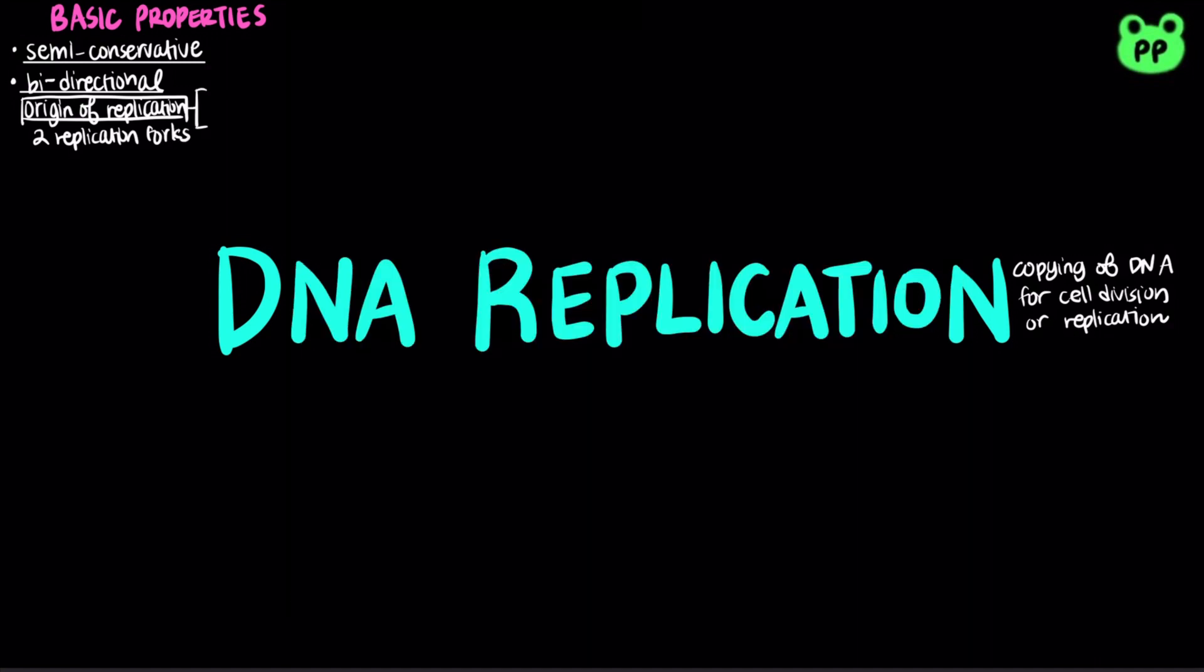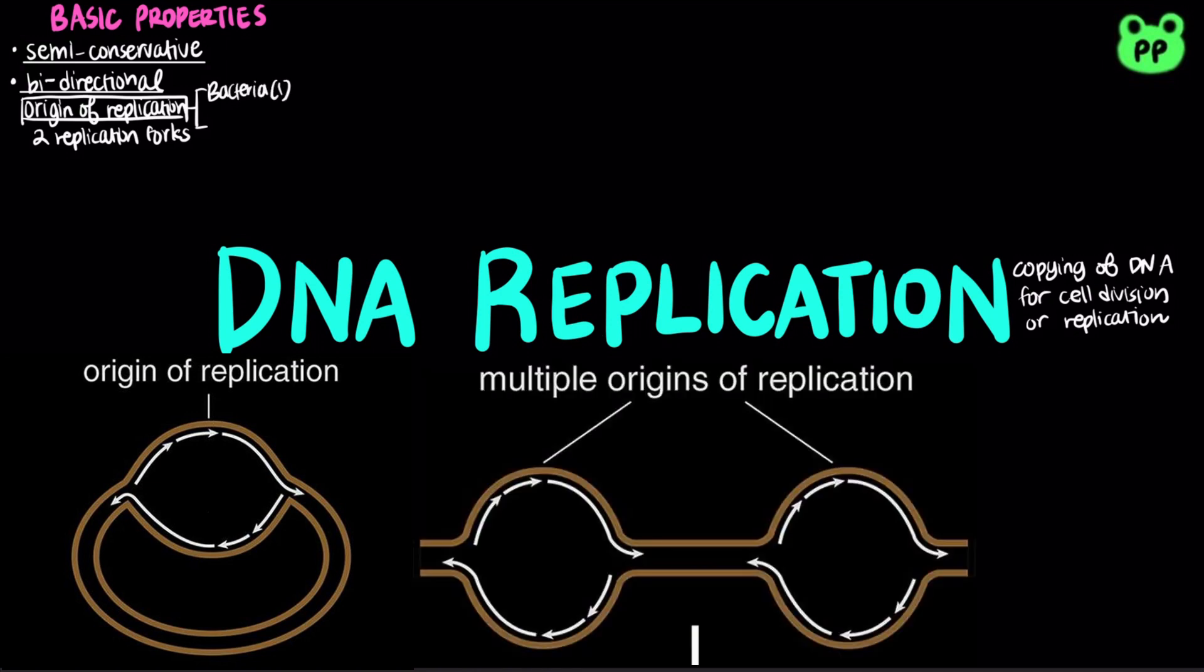Bacterial chromosome is circular and only has a single origin of replication, whereas eukaryotic chromosome is linear and much larger, therefore could have up to thousands origin of replication.